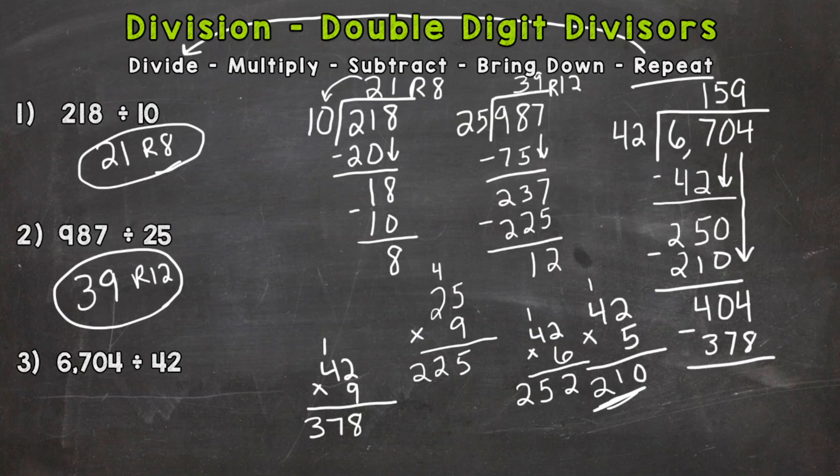So we need to borrow. This 1 turns to a 3, this turns to a 10, but it's actually a 9 because we need to borrow one more time, and this is a 14. So 14 minus 8 is 6, 9 minus 7 is 2, 3 minus 3 is 0. Our remainder is 26, so 159 remainder 26.